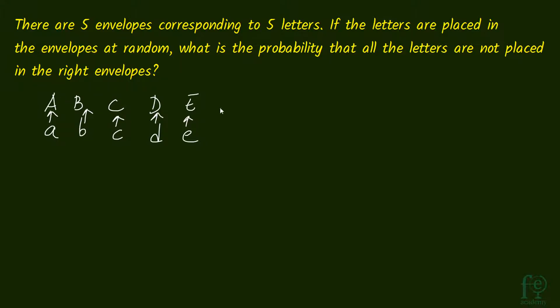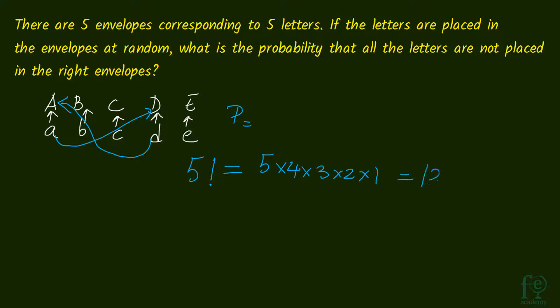Even if one is changed — suppose A is placed in D and D is placed in A — then all the letters are not placed in their right envelopes. There is only one way in which all the letters can be placed in the right envelopes. There are 5 envelopes and 5 letters, so the total number of ways to arrange 5 letters in 5 envelopes is 5 factorial, which is 5×4×3×2×1 = 120.